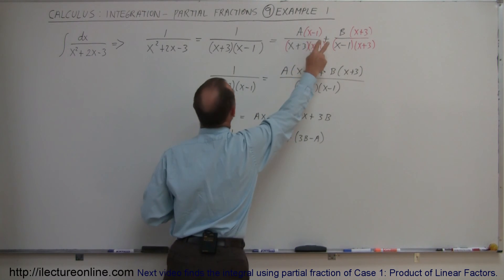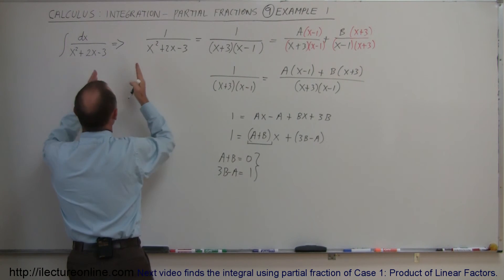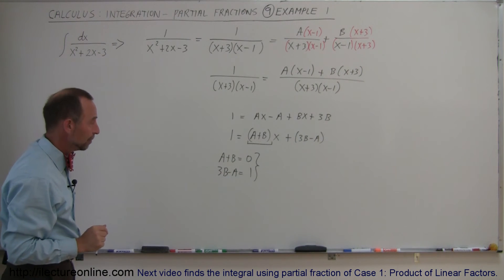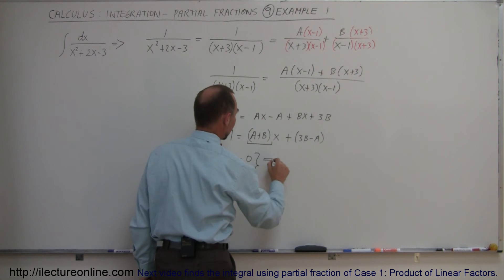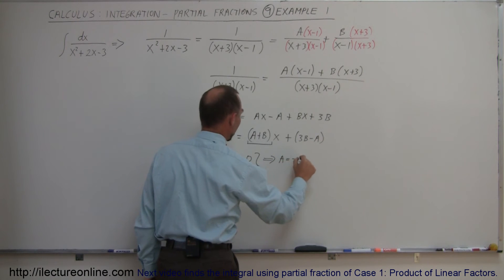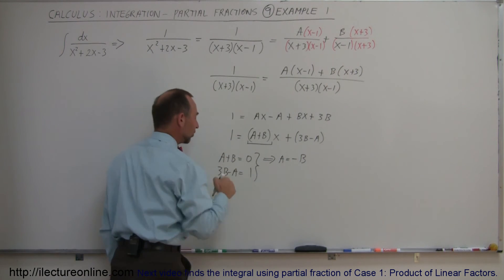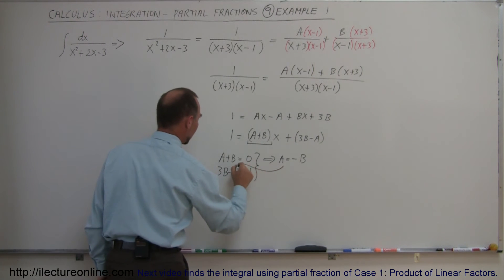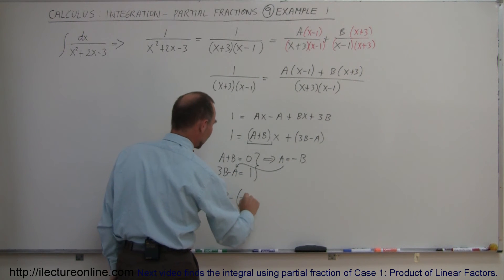When I plug those back in over here, I can then write this as a sum of two fractions. So let's go ahead and find out what A and B are equal to. Using the first equation, I can say that A must be equal to minus B, simply moving the B to the other side of the equal sign. And then I can plug that into my second equation, plug it in right here. So that means that 3B minus A, and A of course is equal to minus B, that is equal to 1.